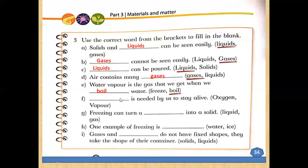Number f: dash is needed by us to stay alive — which gas, oxygen or vapor? Oxygen is needed by us to stay alive. Number g: freezing can turn a dash into a solid — liquid or gas? Freezing can turn a liquid into a solid.